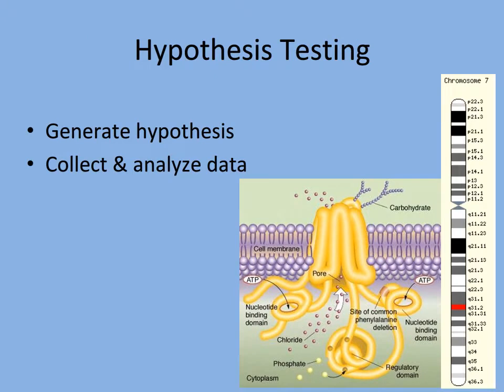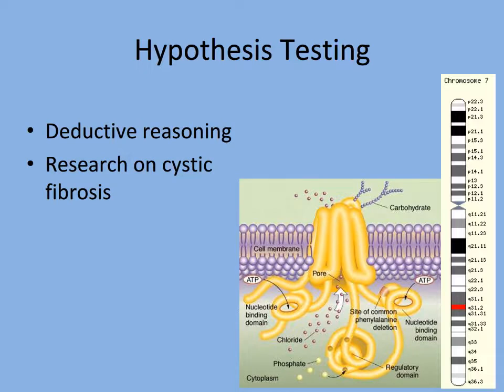We can also study life by testing hypotheses. This type of research is commonly done in a laboratory setting, where all factors in the experiment can be controlled. First, we generate a hypothesis, which is a possible explanation to the question we have about the subject. Then we perform an experiment to test our hypothesis. We must analyze the data collected to determine if our hypothesis was correct or not. In hypothesis testing, scientists use deductive reasoning to predict the results of an experiment based on logical assumptions.